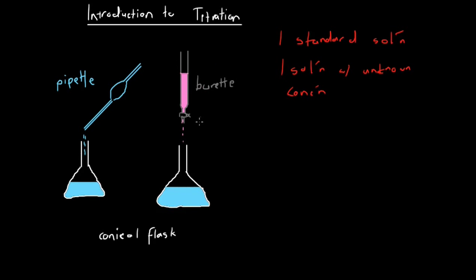Titration is basically when we have these two solutions — the standard solution and the solution with unknown concentration. What we do is we measure out a known volume of the solution with the unknown concentration and we put it in a conical flask. Then we use a piece of equipment called a burette to slowly release the standard solution into the unknown solution, drop by drop, until we reach something called the equivalence point.